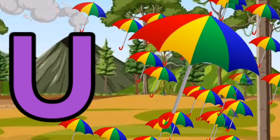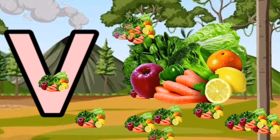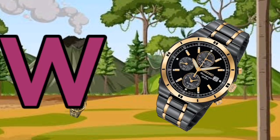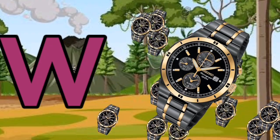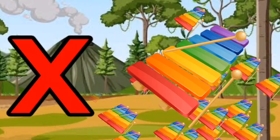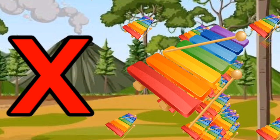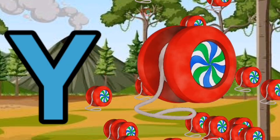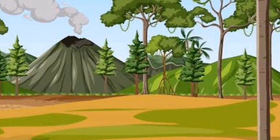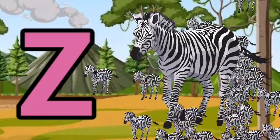U for umbrella. V for vegetable. W for watch. X for xylophone. Y for yoyo. Z for zebra. I'll see you next time.